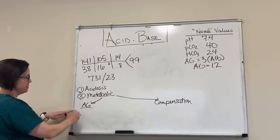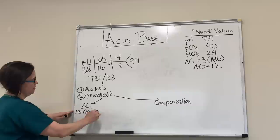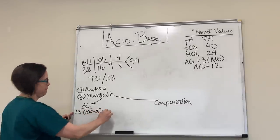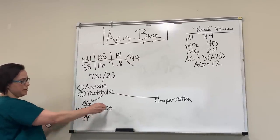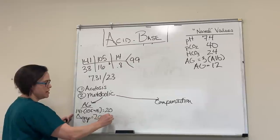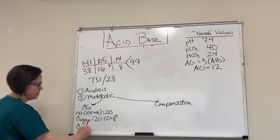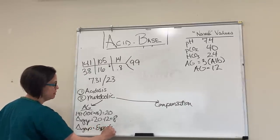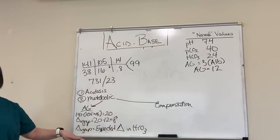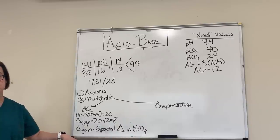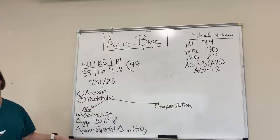Anion gap: sodium minus chloride minus bicarb equals 141 minus 105 minus 16 equals 20. That's my calculated anion gap. Delta gap is calculated minus normal: 20 minus 12 equals 8. My delta gap is my expected change in bicarb — that's the key point. Normal bicarb is 24, expected change is 8, which takes me down to 16 — exactly what it is, so no other metabolic disorder.